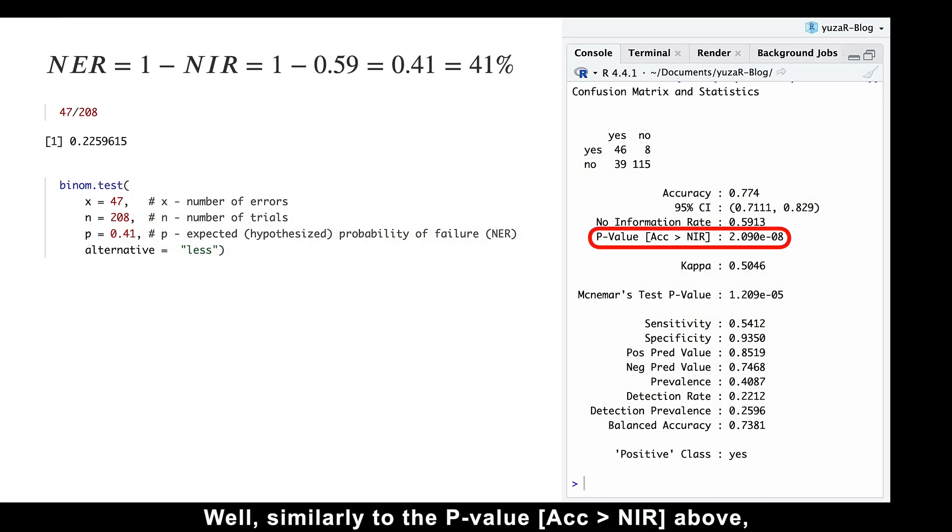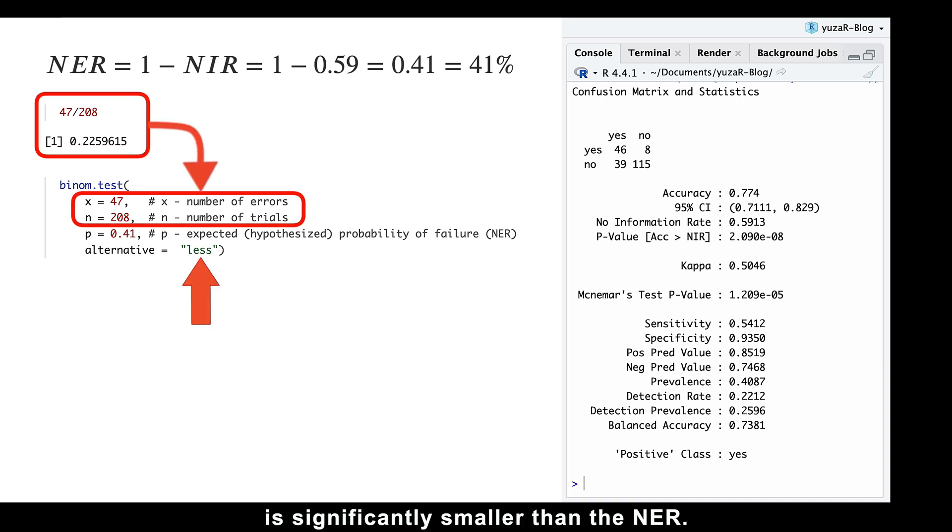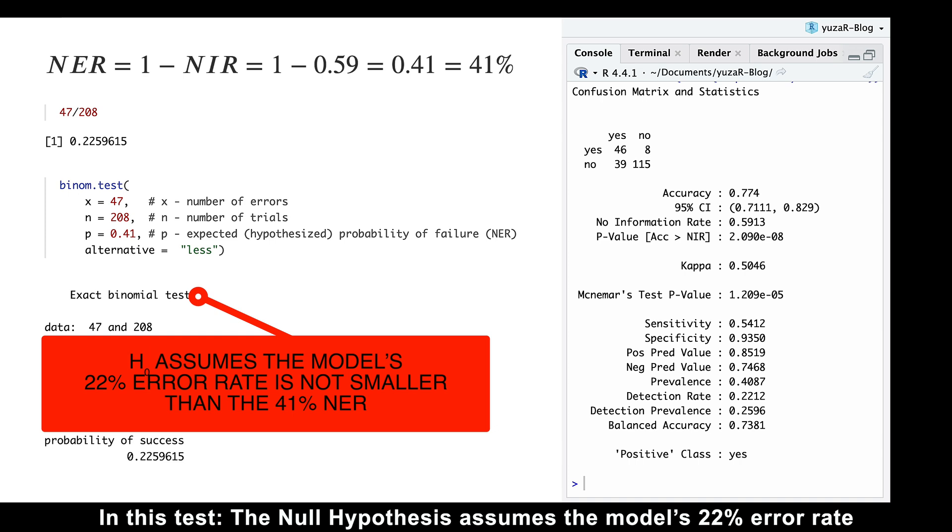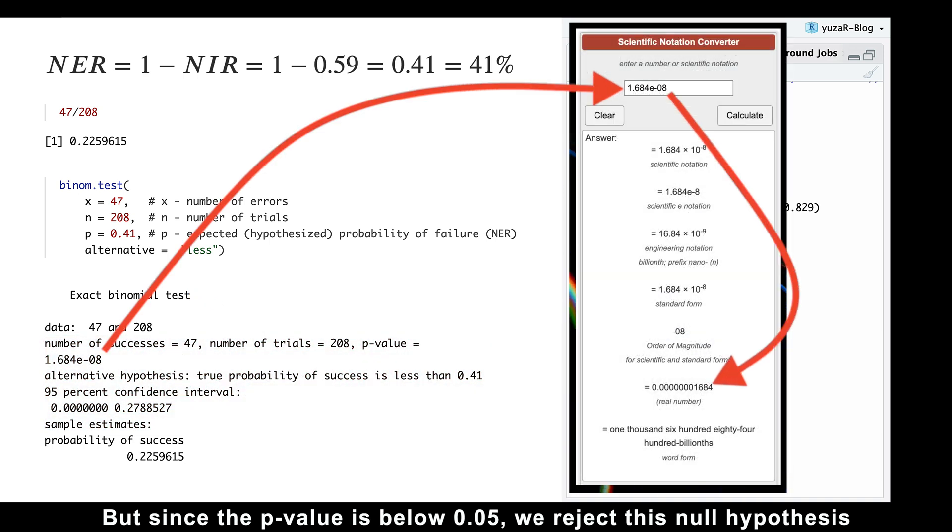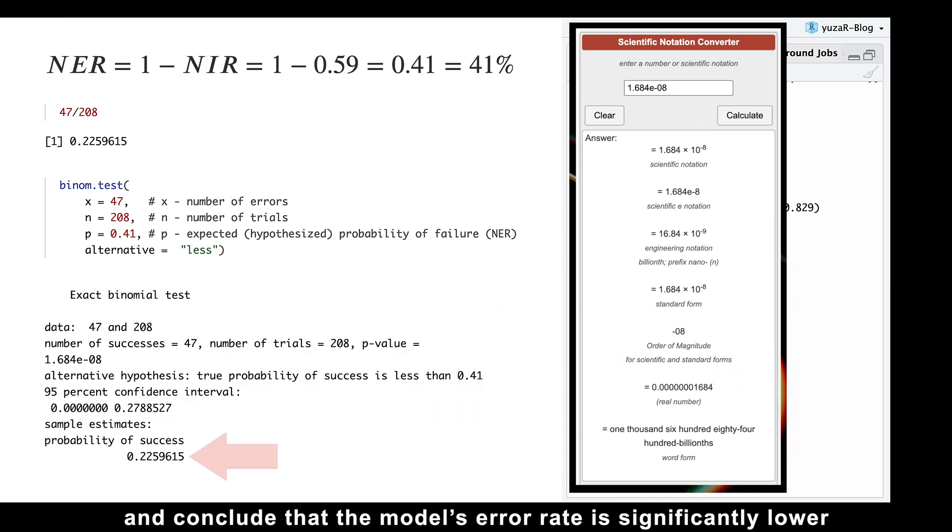Well, similarly to the p-value above, we use a one-tailed binomial test to check if the error rate in our model is significantly smaller than the null error rate. In this test, the null hypothesis assumes the model's 22% error rate is not different from the 41% null error rate. But since the p-value is below 0.05, we reject this null hypothesis and conclude that the model's error rate is significantly lower than the baseline null error rate.